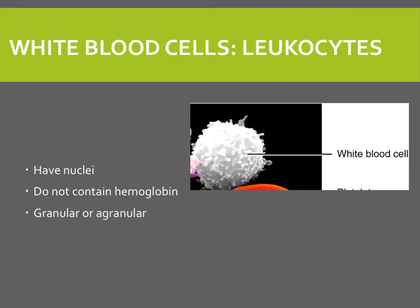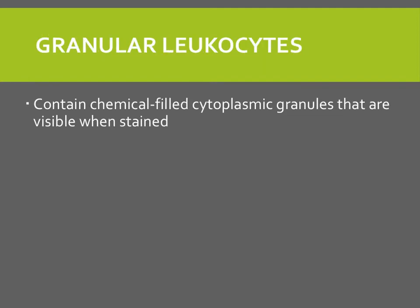White blood cells are also known collectively as leukocytes. These white blood cells are necessary to help combat infection and inflammation in the body and are part of the immune system. White blood cells, unlike red blood cells, have nuclei. They do not contain hemoglobin and are divided into groups as to whether they are granular or agranular.